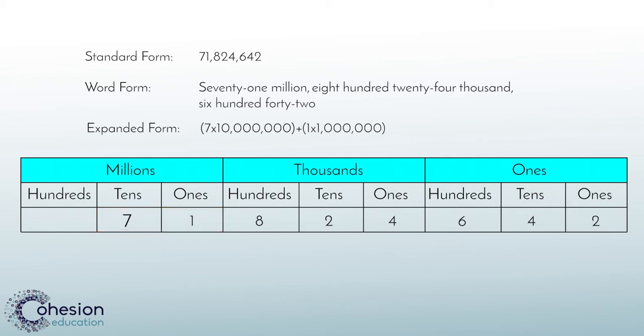You will continue on by adding 8 times 100,000 because 8 is in the 100,000's place, 2 times 10,000 because 2 is in the 10,000's place, and 4 times 1,000 because 4 is in the 1,000's place.